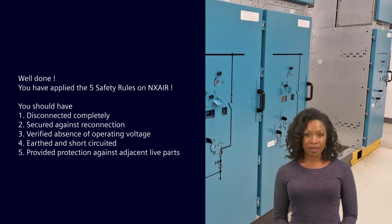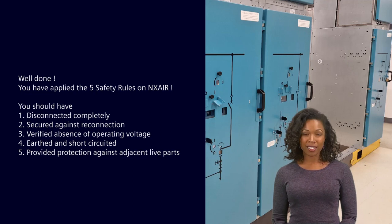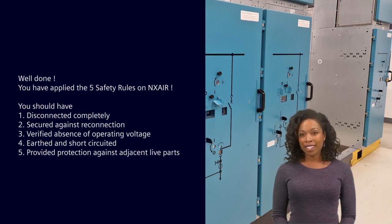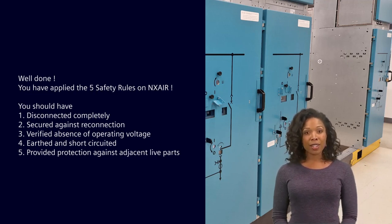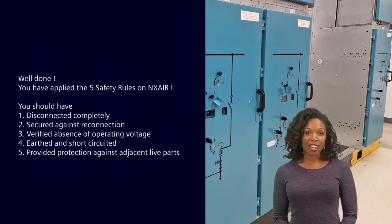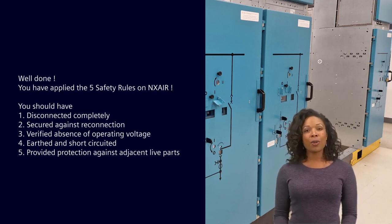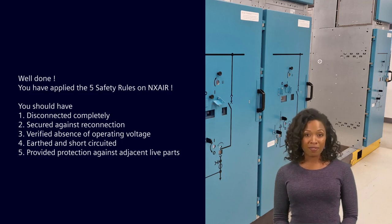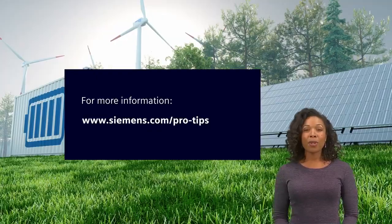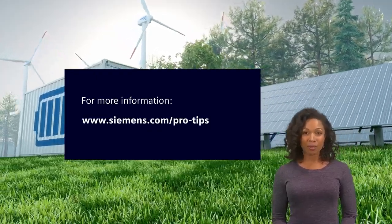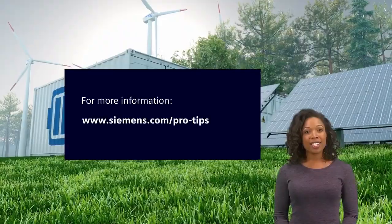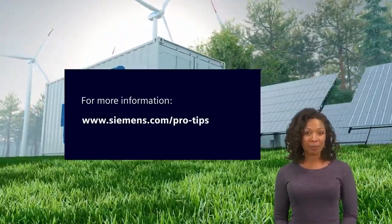Until verified, all electrical sources are assumed to be energized. Step 1: Disconnect completely. Step 2: Secure against reconnection. Step 3: Verify absence of operating voltage. Step 4: Earthen and short circuit. Step 5: Provide protection against adjacent live parts. If you enjoyed this video, please visit the Siemens ProTips website and sign up to receive more useful tips from our experts.